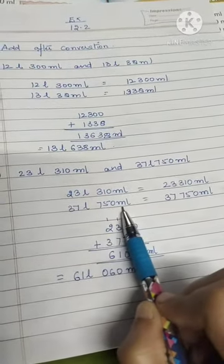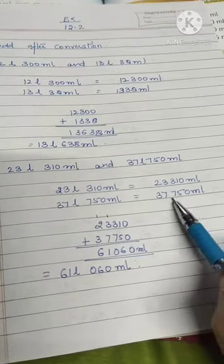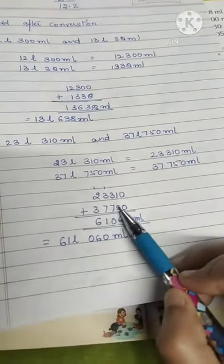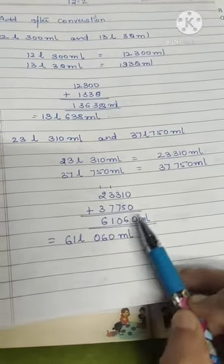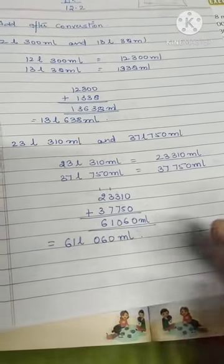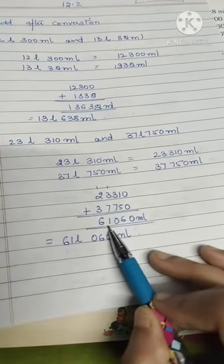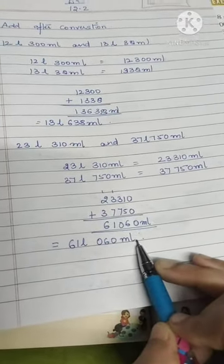You will add both the numbers, so you will get 61,060 ml. So isko divide karne ke liye, alag karne ke liye, phir se peeche se teen number ko alag kar denge and baaki remaining will be liters. So 61 liters and 60 ml.